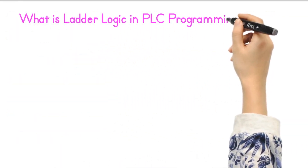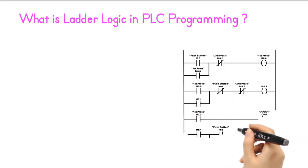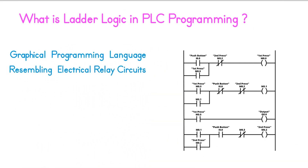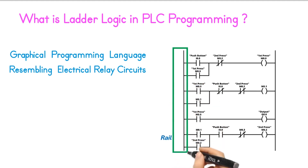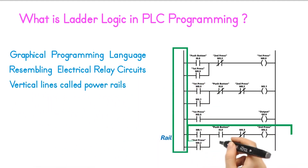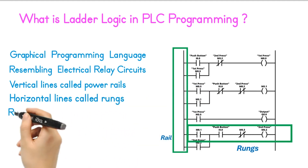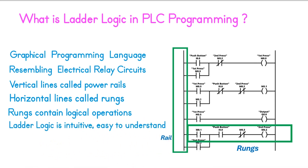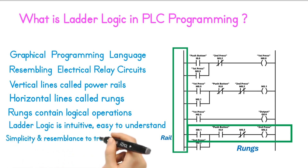What is ladder logic in PLC programming? Ladder logic is a graphical programming language used in PLC programming, resembling electrical relay circuits. It represents control logic visually with vertical lines called power rails and horizontal lines called rungs. Rungs contain logical operations, and each rung consists of inputs and outputs. It supports elements like normally open and closed contacts, coils, timers, and counters. Ladder logic is intuitive, easy to understand, and widely used for industrial automation, and its resemblance to traditional electrical diagrams makes it popular in the automation industry.